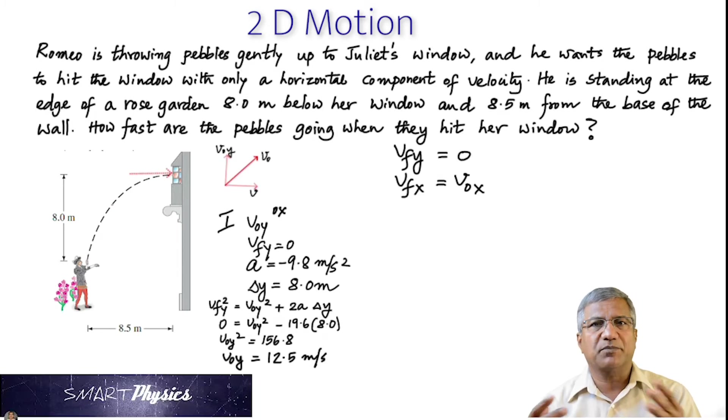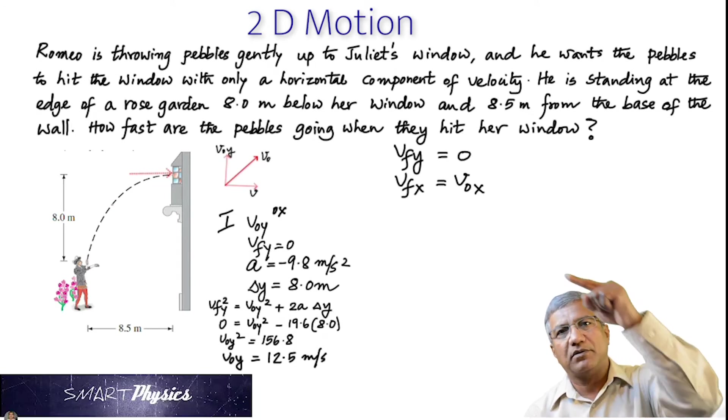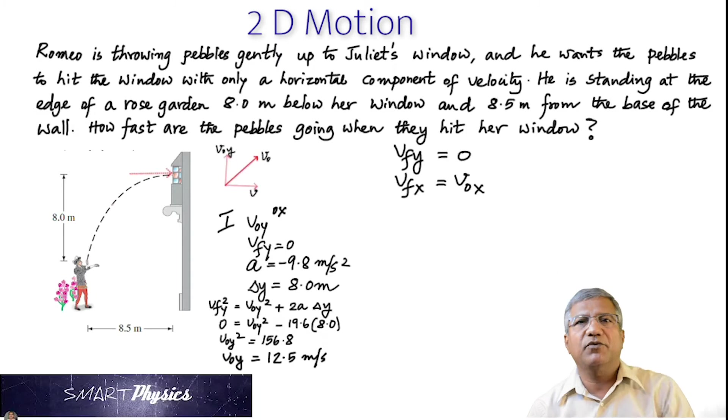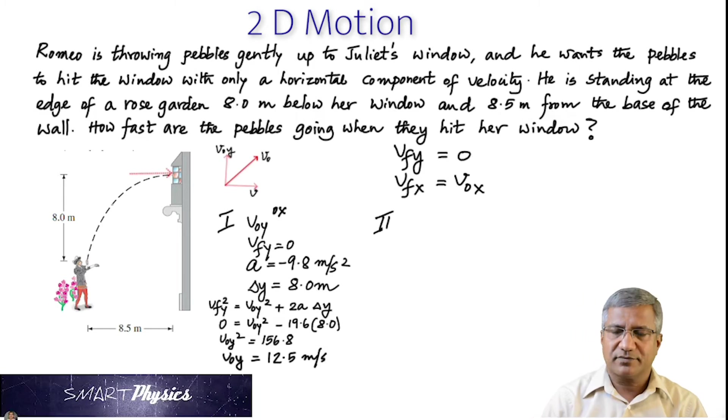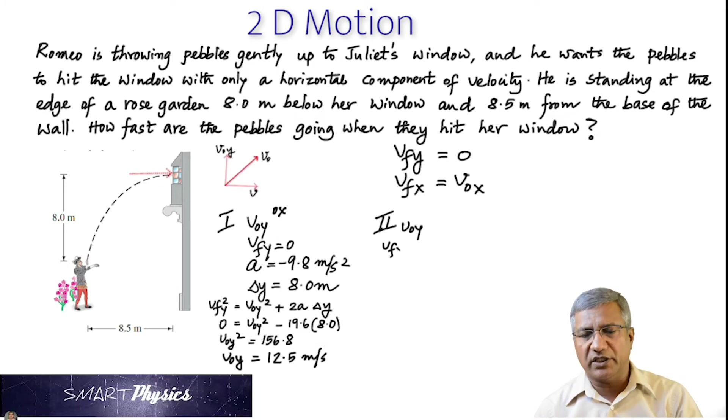Because now in step two, we can use that to find the time it takes for the pebble to reach the window. All right, let's do that. So step two. In step two, again, we are looking at the Y velocity. The initial is V0Y. The final Y velocity is 0.